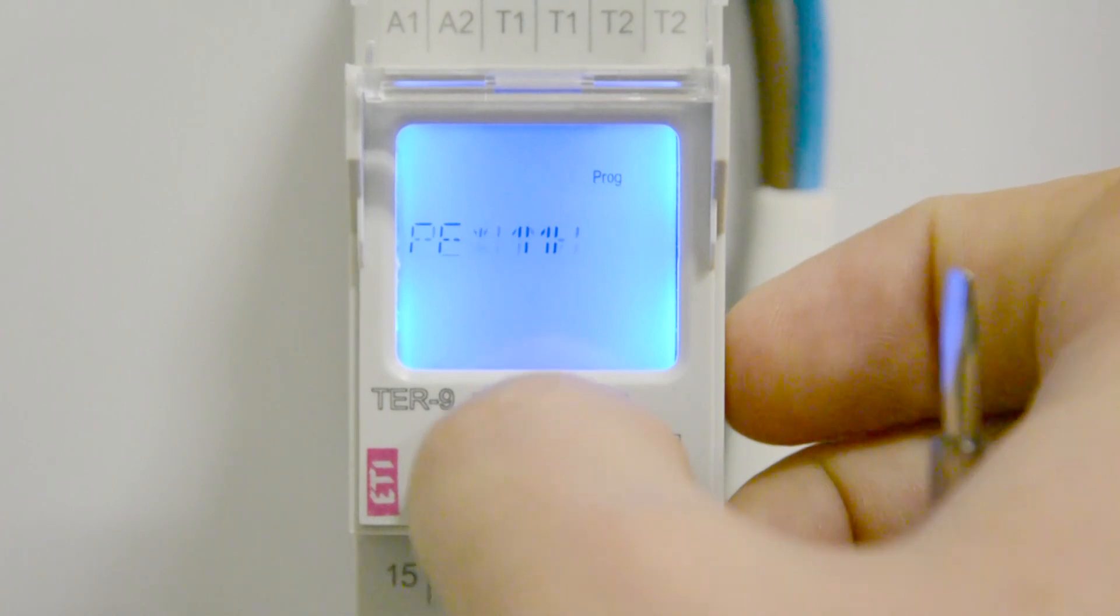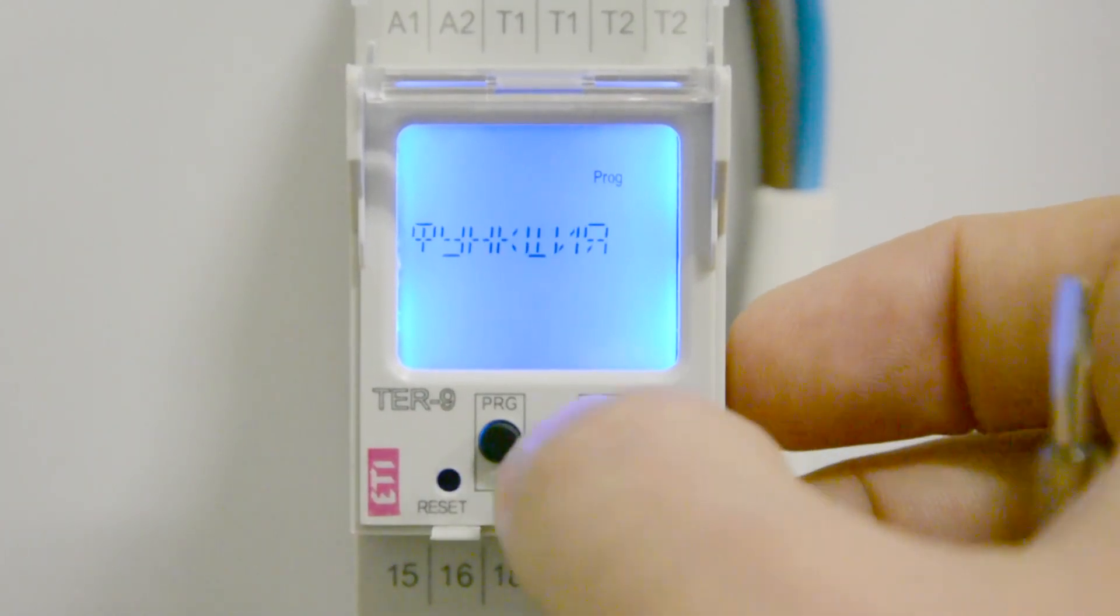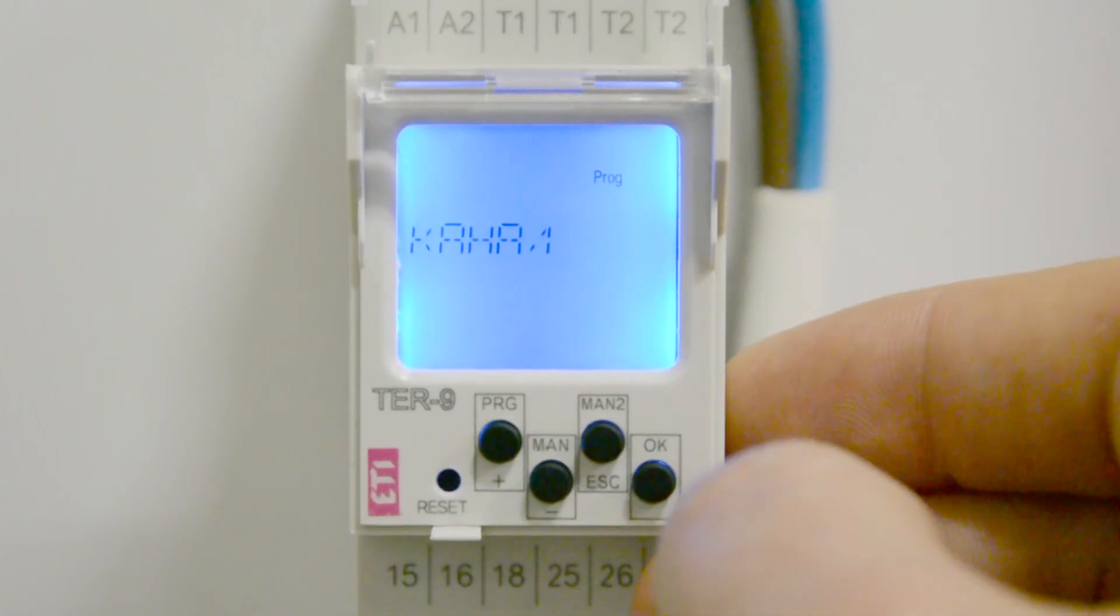To set the required temperature level, go to the temperature submenu, where we set the required value for each of the channels.